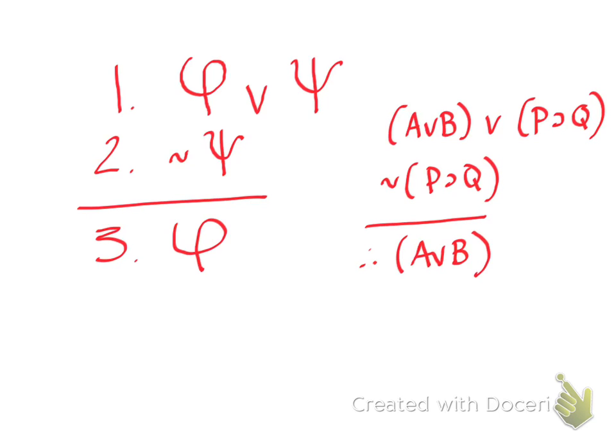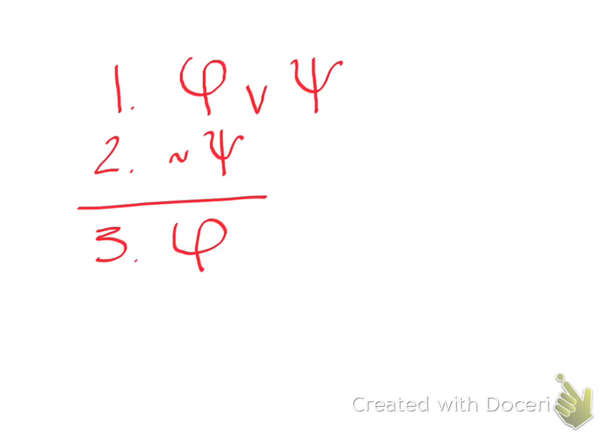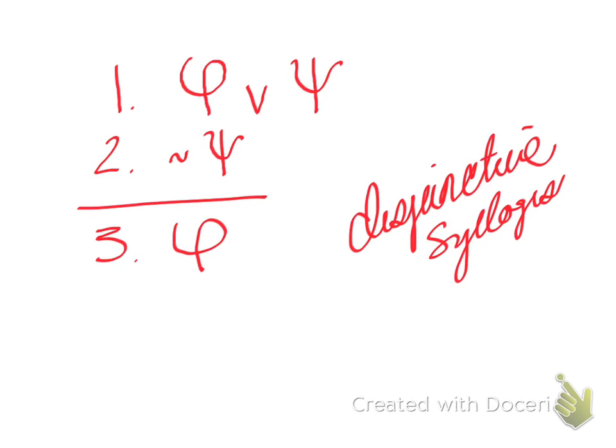This has the same form. It is a disjunction, one of the disjuncts is negated, and we have inferred the other disjunct. This is also a common argument form, and it is special enough that we should give it a name. Sometimes it's called just process of elimination. Sometimes it's called disjunctive syllogism. Or, as we'll abbreviate it, DS.